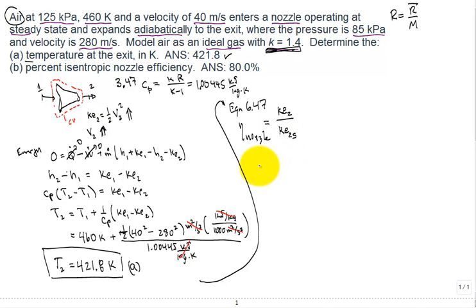What is our specific kinetic energy at the exit? That's our one half the velocity at the exit squared, which we were given: 280 meters per second. We can calculate that—that comes in at a whopping 39.20 kilojoules per kilogram.